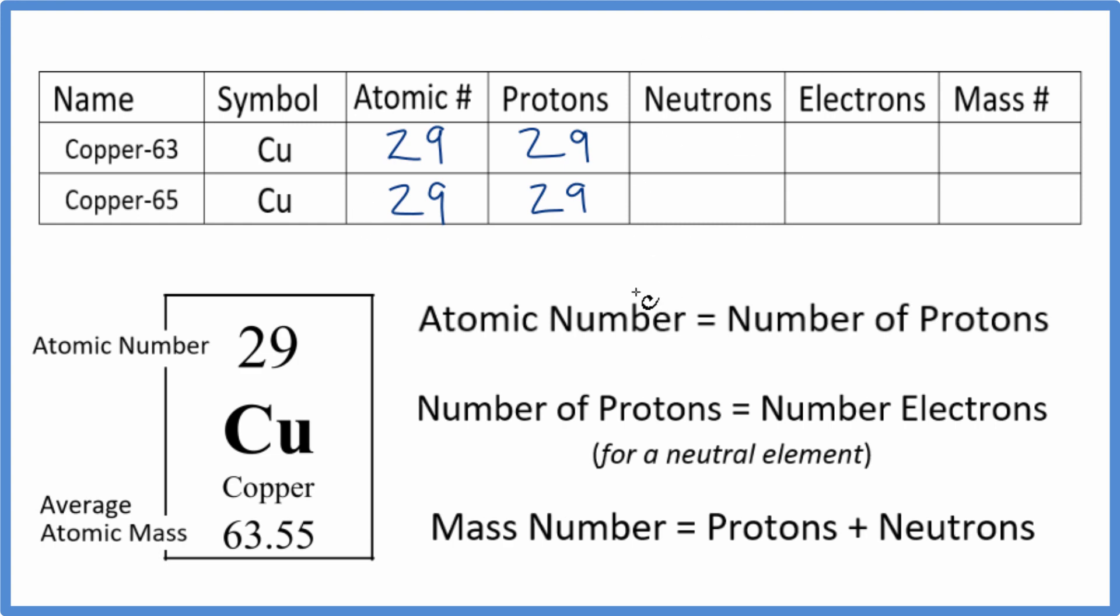Let's skip the neutrons and talk about electrons. On the periodic table, copper doesn't have a negative or positive sign. That means it's neutral, and the number of protons will equal the number of electrons. That's why it's neutral—the positive and negative balance out. So since we have 29 protons, we have 29 electrons as well.